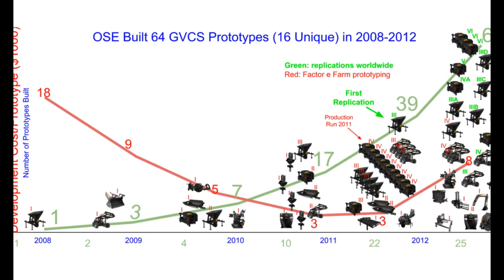We have a graph of prototypes built and cost — for a five-year period from when the first machine was built. The red line shows cost per machine: at the very beginning it was about $18,000 per machine, then kept dropping, then rose back up, but the number of machines kept rising through 2013. Since then we're at about 20 or so unique prototypes, over 120 or so machines built. 2011 was when the TED talk happened.